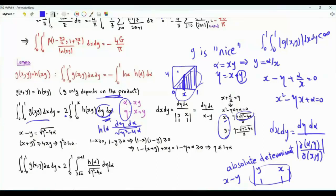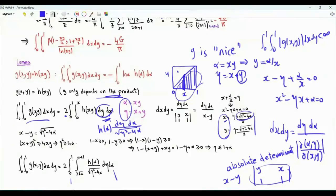h(x,y) becomes h(α). For the limits of integration: if we multiply two real numbers between 0 and 1, we get a result between 0 and 1, so the outer integral with respect to α runs from 0 to 1.